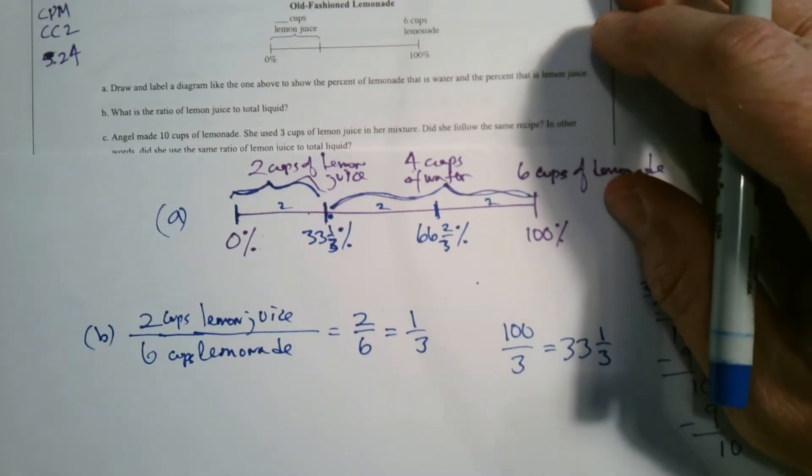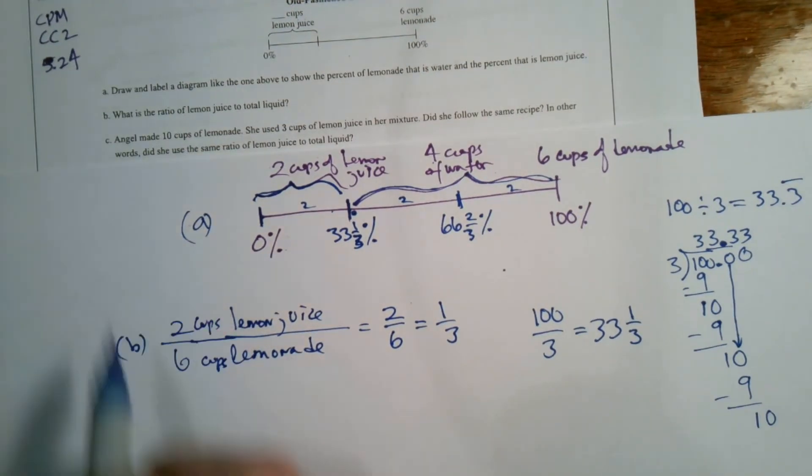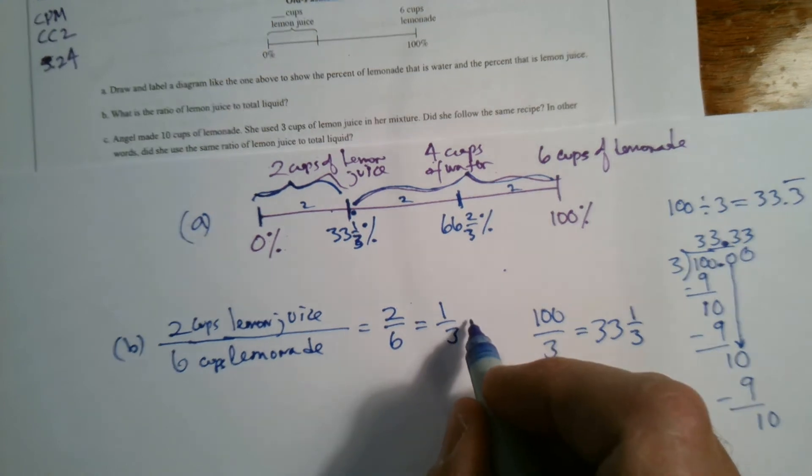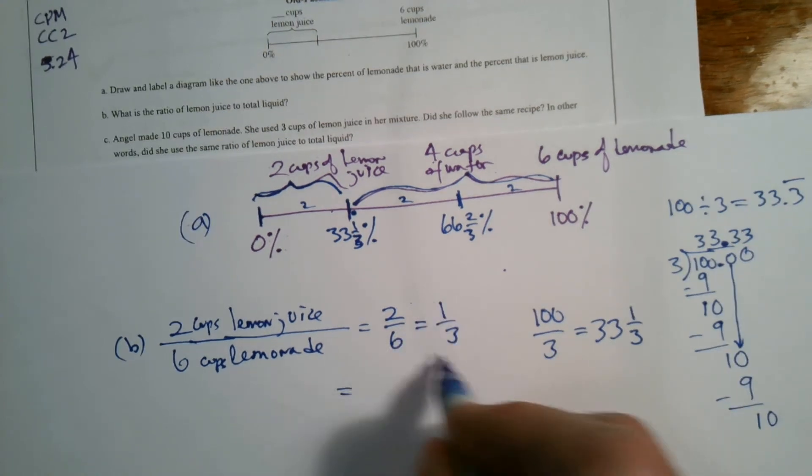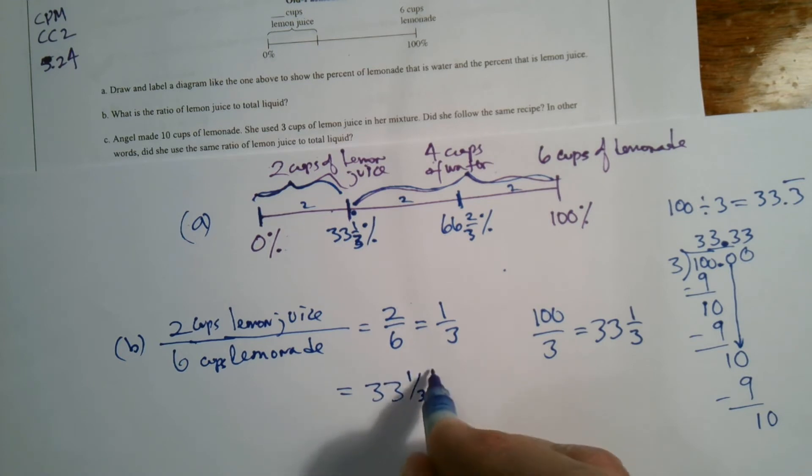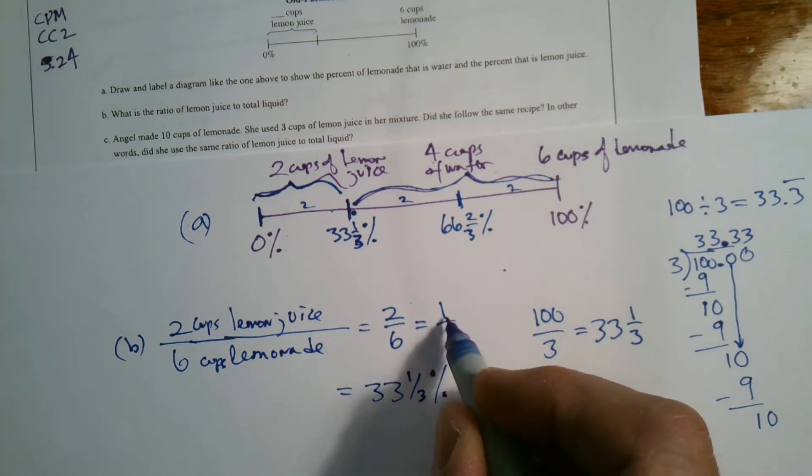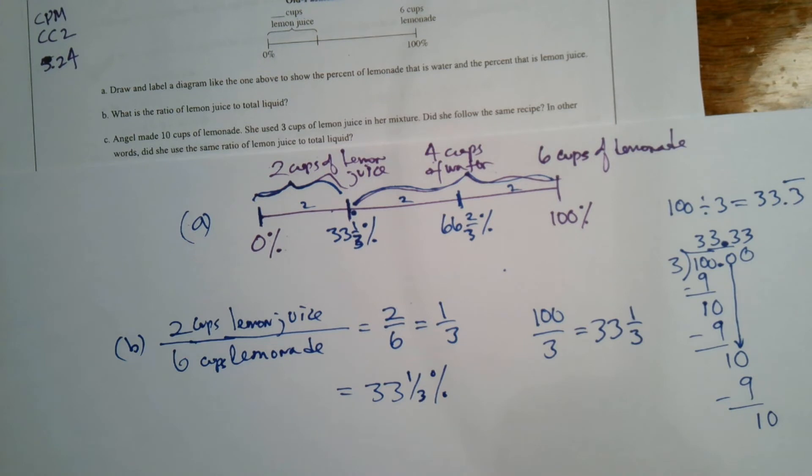And also, by the way, if we're looking at this as a ratio as a percent, that would be 33 and 1/3 percent. So as a ratio, it's one to three. As a percent, it's 33 and 1/3.